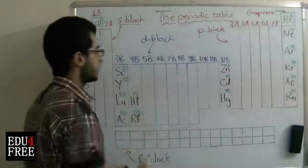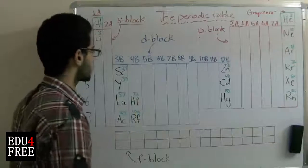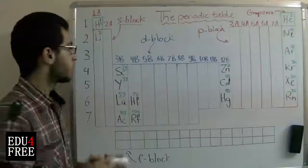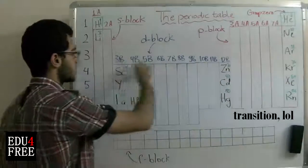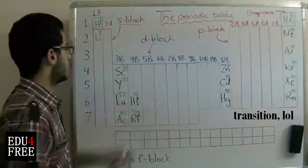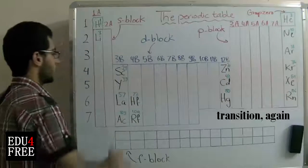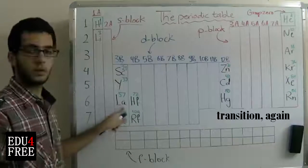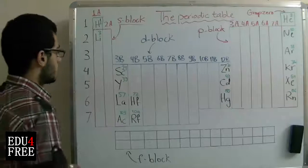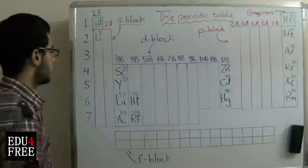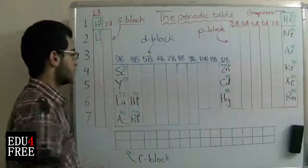Next, we will talk about the D block elements. The D block elements are called the transition elements, and they are classified into three groups. The first group is called the first transition series, which consists of the first row in the D block, beginning from scandium to zinc. And the second transition series begins from yttrium to cadmium. As mentioned, when we move one step from left to right, an electron is added to the electronic configuration of the element.